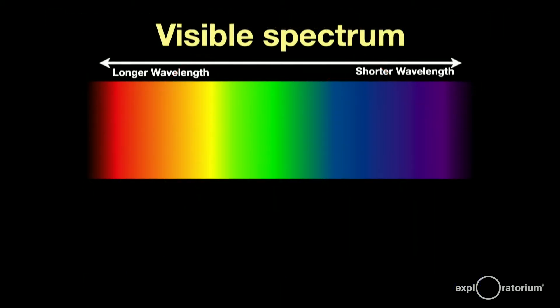Long wave visible light is red. As you shorten the wavelength, you'll proceed through the visible spectrum from red to orange, yellow, green, blue, indigo, and finally, violet.